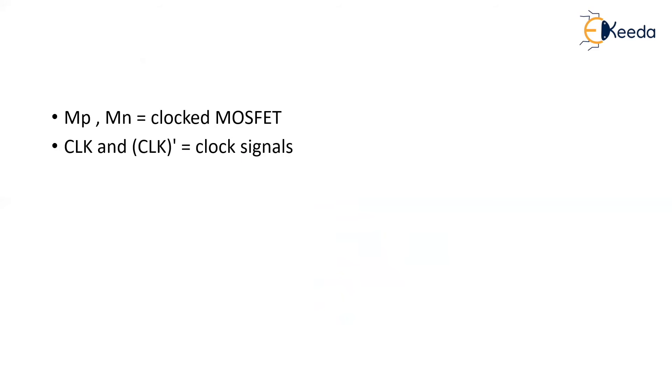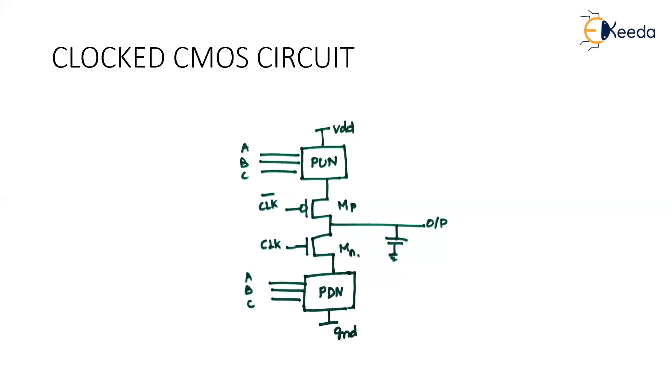What are MP and MN? MP and MN are the clocked MOSFETs. Clock and clock bar are your clock signals.